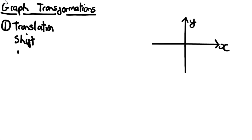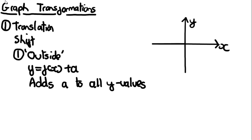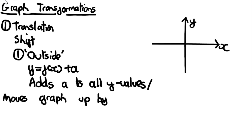First, let's go through the so-called outside the function translation. This is when it's of the form y = f(x) + a. What this translation does is it adds a to all of the y-values — so all the y-values have a added to them, where a is a constant.